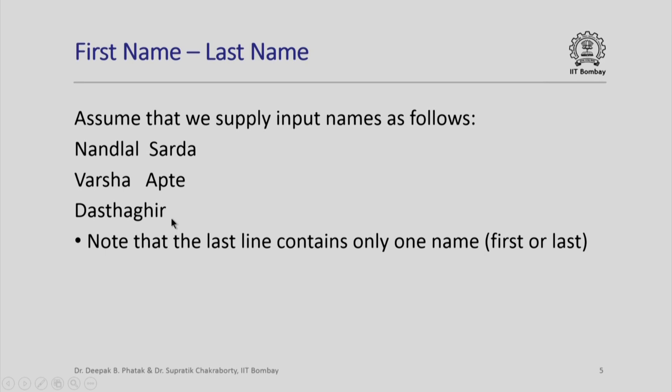Dastagir, it has no second name. So the last line that is shown as a sample input contains only one name. We do not know whether it is first or last, but whatever it is, the line has only one name given. We obviously expect to write a program which will handle all these possible variations in the user input.